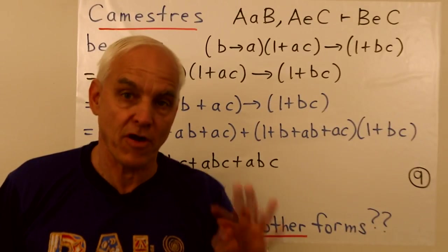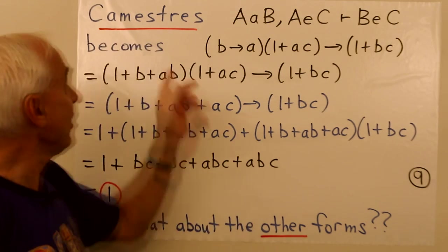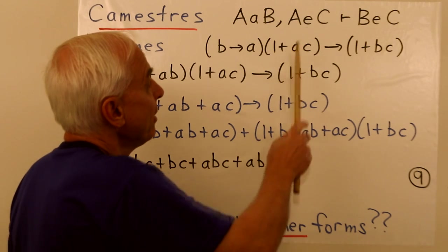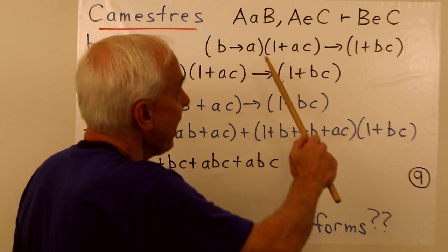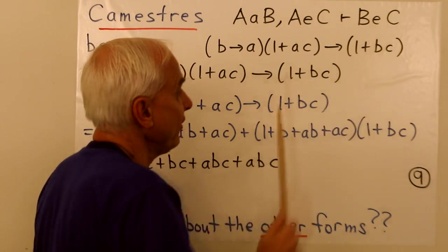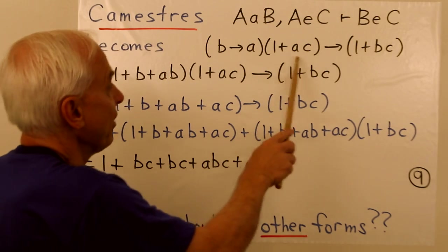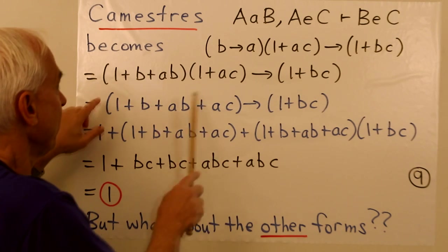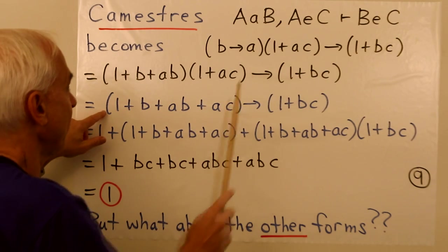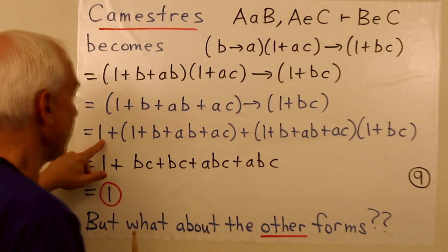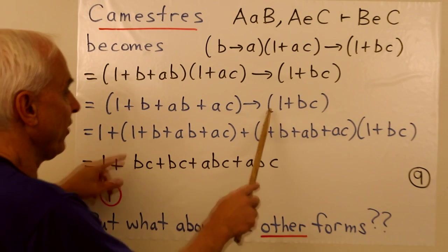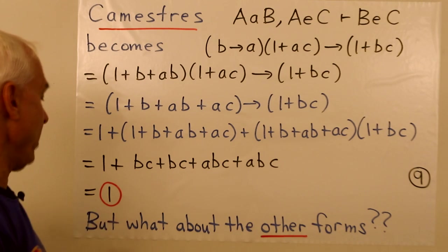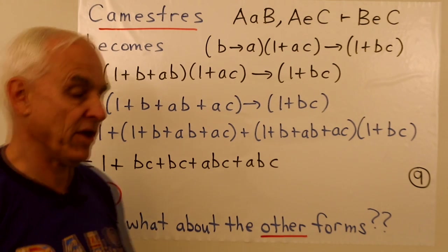And the last one of our four perfect syllogisms is Camestres. Every B is an A. No C is an A implies no C is a B. There's algebraic forms for those various things. We've expanded this one here. And we expand it and simplify it. We get this. We write it out. And it's the usual way. One plus the first term plus the product. And then we simplify this thing here. And we get one. So that's the proof of Camestres.